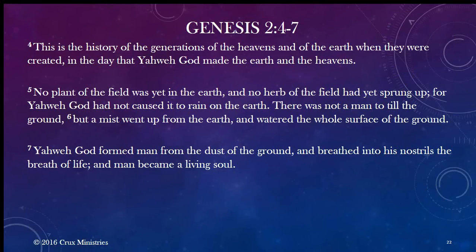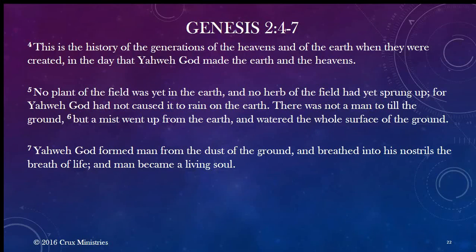We're starting in Genesis 2 reading verses 4 through 7. Sarah reads: 'This is the history of the generations of the heavens and of the earth when they were created, in the day that Yahweh God made the earth and the heavens. No plant of the field was yet in the earth, and no herb of the field had yet sprung up, for Yahweh God had not caused it to rain on the earth. There was not a man to till the ground, but a mist went up from the earth and watered the whole surface of the ground. Yahweh God formed man from the dust of the ground and breathed into his nostrils the breath of life, and man became a living soul.'